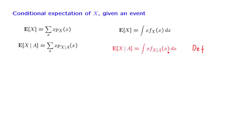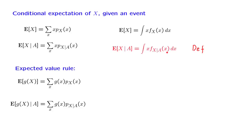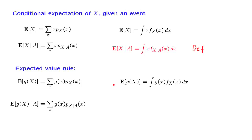We have a similar situation with the expected value rule, which we have already seen for discrete random variables in both the unconditional and conditional settings. We have a similar formula for the continuous case, and at this point you can guess the form that the formula will take in the continuous conditional setting.